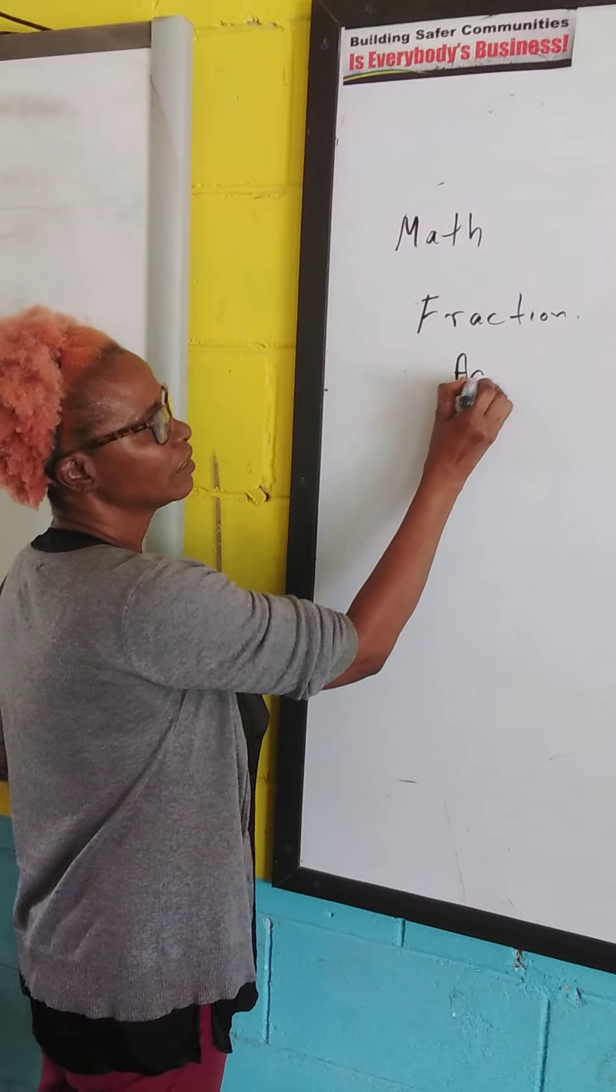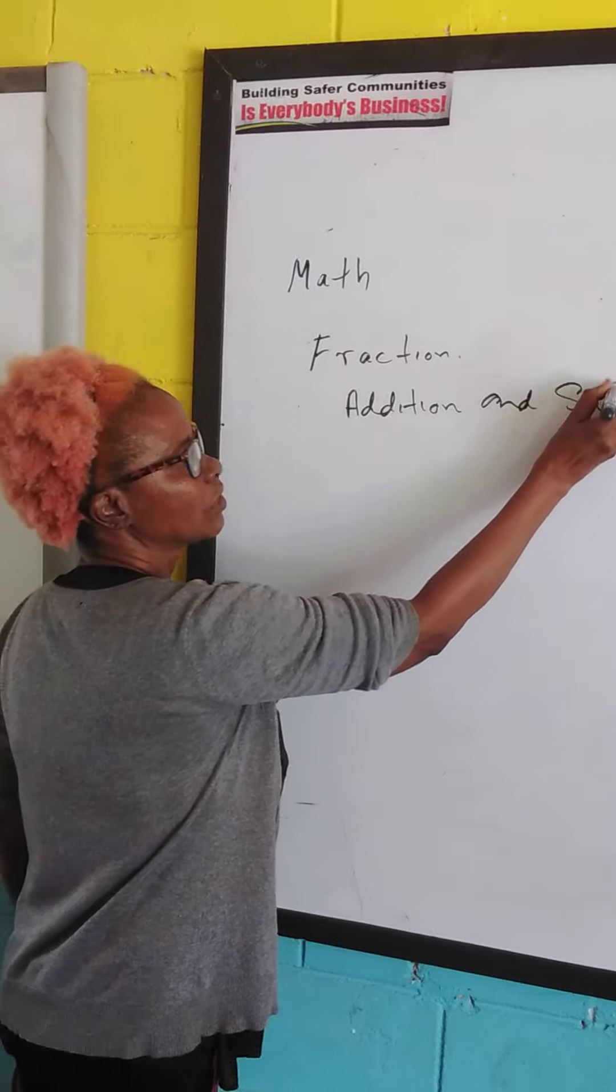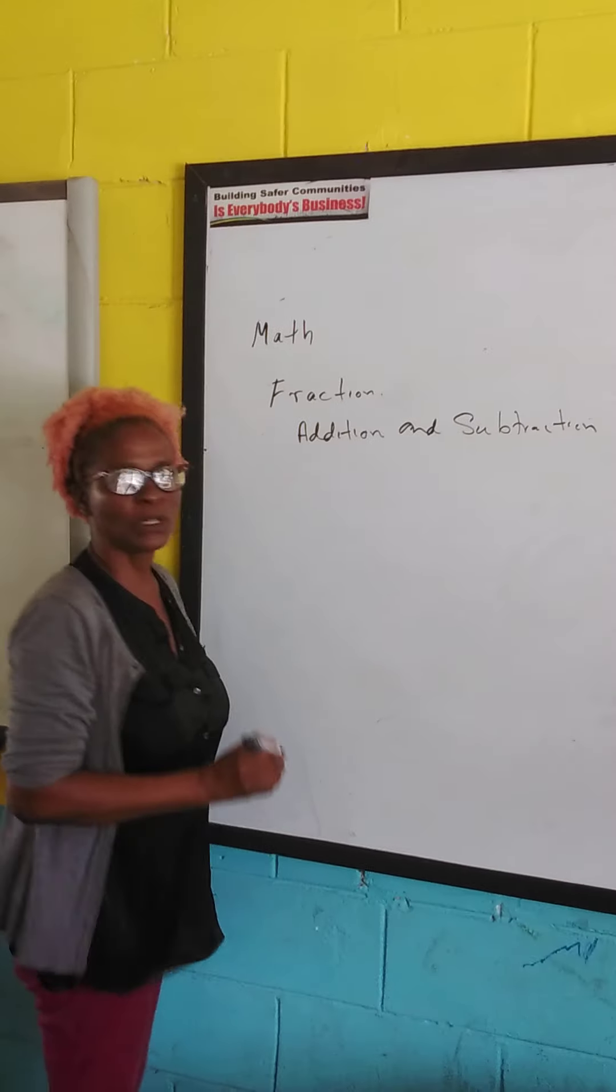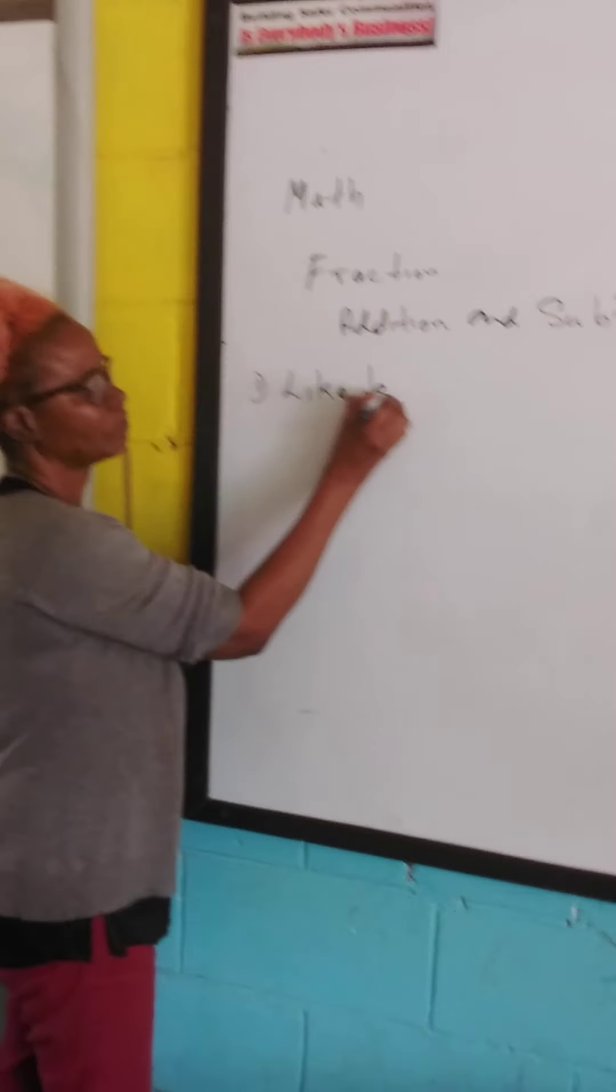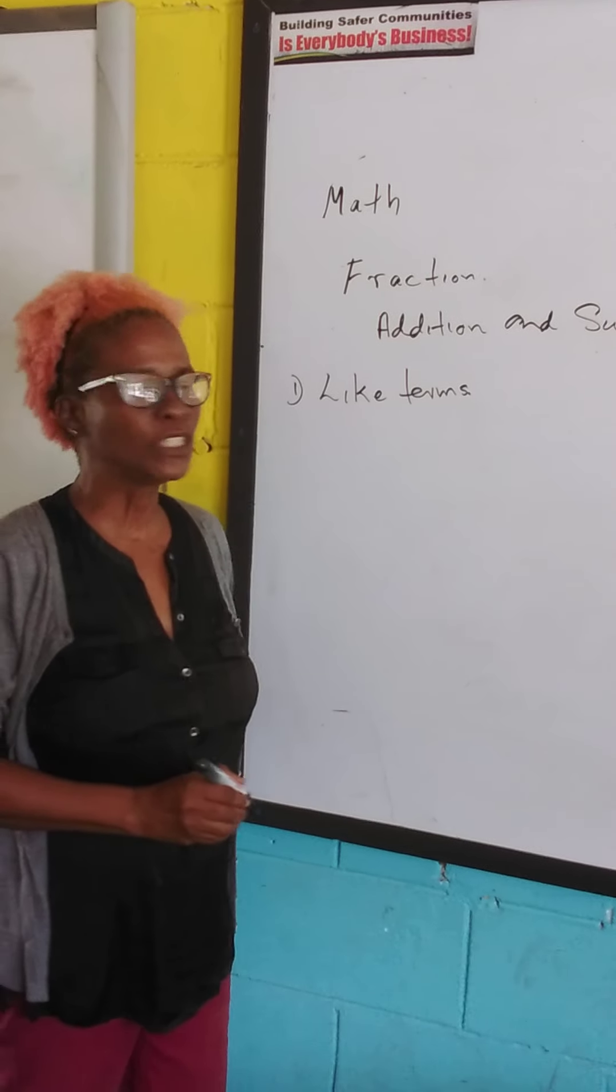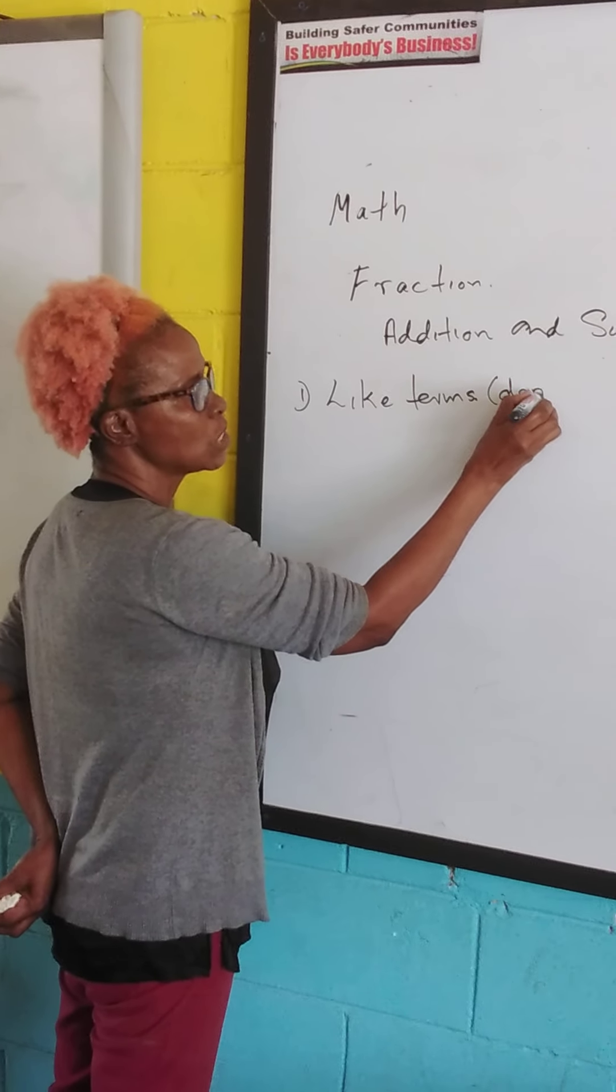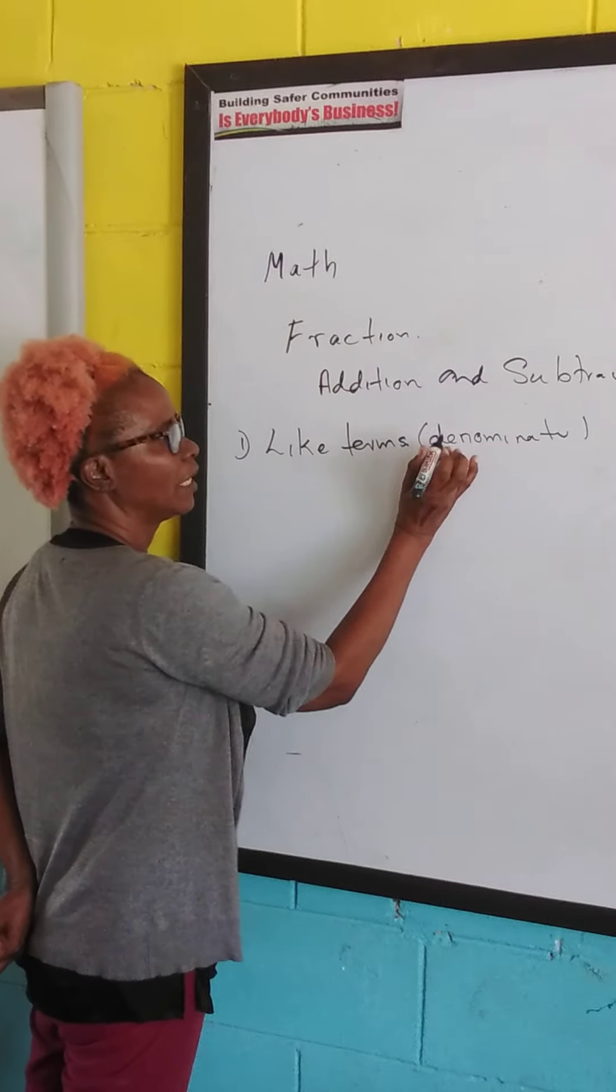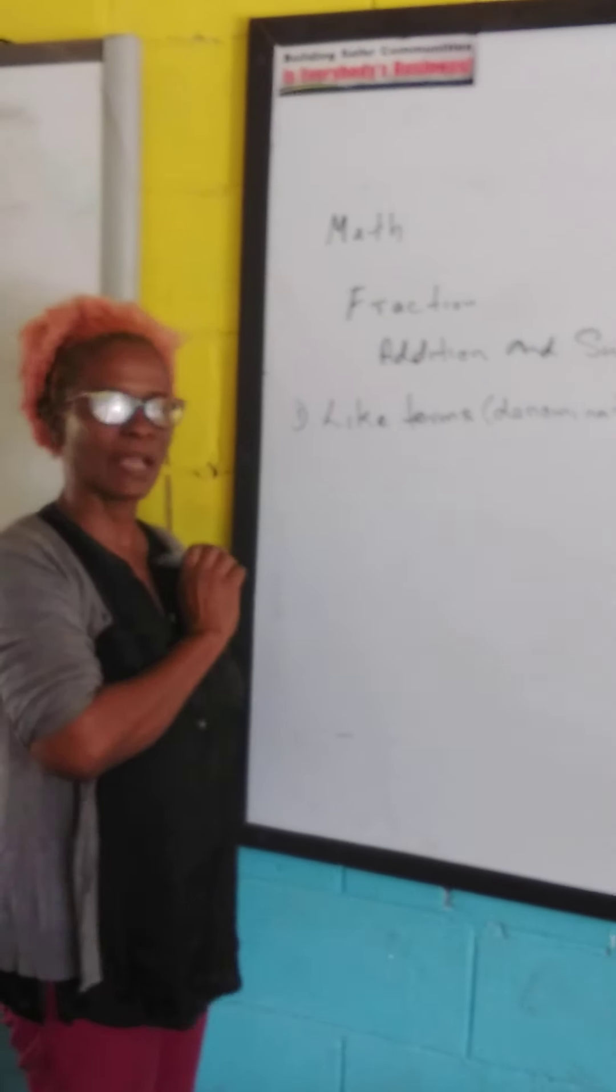So we're looking at addition and subtraction, and the first thing we're going to look at is the like term. And like terms here, I'm talking about same denominator. We're talking about the D, the denominator. Okay, so let's also have an example.